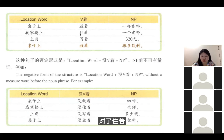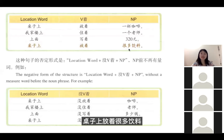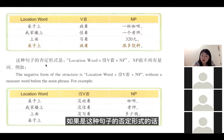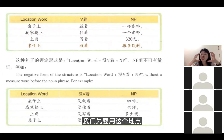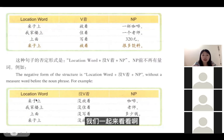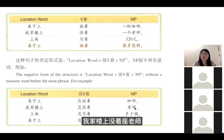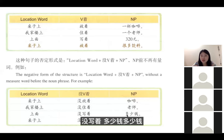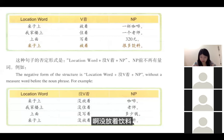课文例子：桌子上放着一杯咖啡；我家楼上住着一个老师；桌子上放着很多饮料。存在句的否定形式：先说地点，然后用没，结构是没有动词着加东西。例如：桌子上没放着咖啡；我家楼上没住着老师；桌子上没放着饮料。